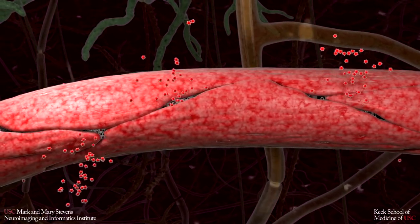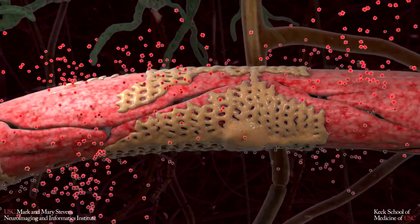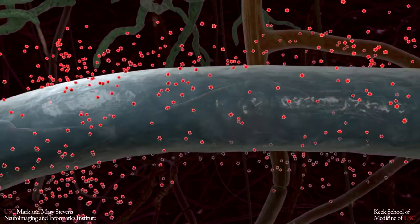The pericyte cells also degrade, and the blood-brain barrier loses structural integrity. As this happens, the brain's custodial system fails.